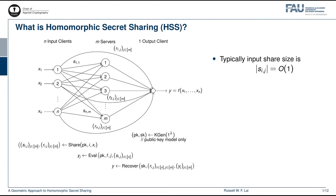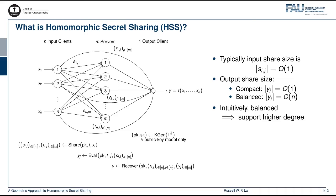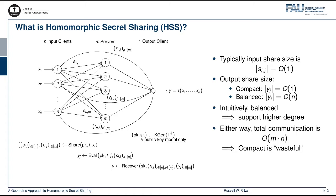For efficiency, we are mostly interested in the sizes of the input and output shares. Typically, an input share Sij is of constant size. On the other hand, an output share could either be of constant size, in which case we call the HSS scheme compact, or it is of size linear in the number of inputs N, in which case we call the HSS scheme balanced. Intuitively, a balanced HSS scheme would support polynomials of higher degrees. Either way, the total communication is linear in M times N. In this sense, a compact HSS scheme is wasteful as far as asymptotic communication complexity goes.